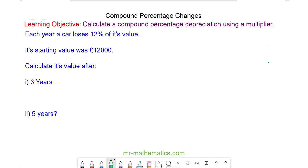Hello and welcome to our lesson on compound percentage changes. We're going to begin with this question. Each year a car loses 12% of its value. Its starting value was £12,000. Calculate its value after three years.